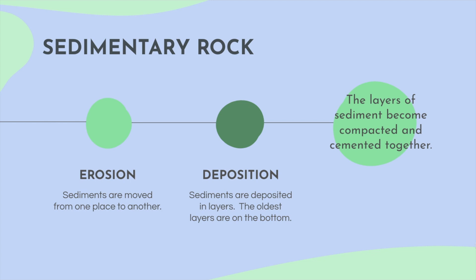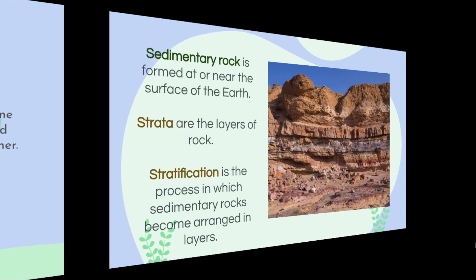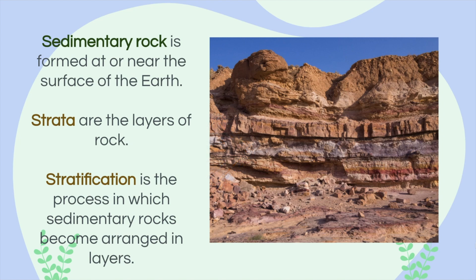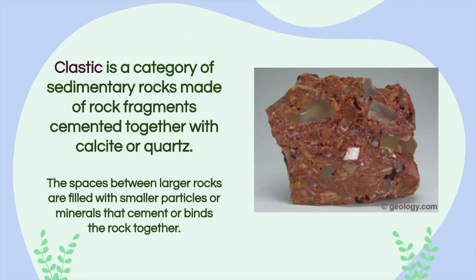The layers of sediment become compacted and cemented together, forming sedimentary rock. Sedimentary rock is formed at or near the surface of the earth. Strata are the layers of the rock — you can see it in the picture on the right, the different layers of the rocks. Stratification is what we call the process in which sedimentary rocks become arranged in these layers. Clastic is a category of sedimentary rocks made of rock fragments cemented together with calcite or quartz. The spaces between larger rocks are filled with smaller particles or minerals that cement or bind the rock together.